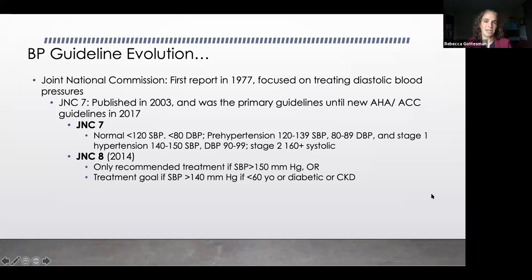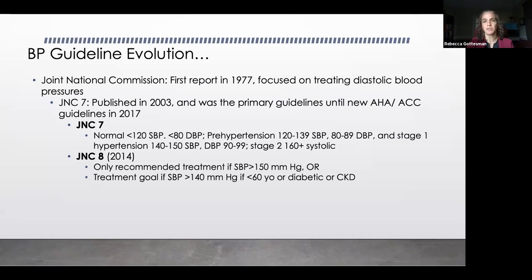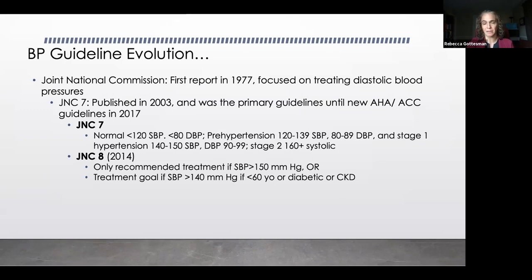In terms of the guidelines for hypertension, the first report from the JNC was in 1977, which was really focusing on diastolic blood pressure as the main target. JNC-7 was really the one that most people used for a long period to think about how we define hypertension. Published in 2003, and really until newer guidelines were published several years ago, it was the primary set of guidelines by which people were defined for their hypertension and management decisions were made.